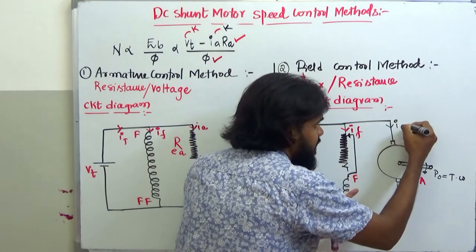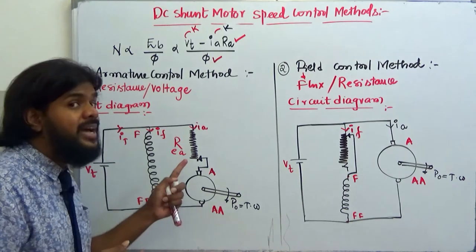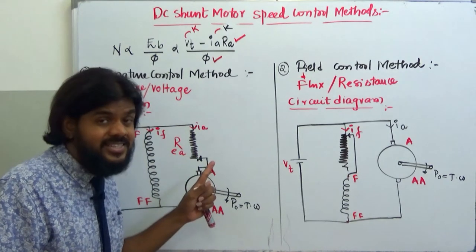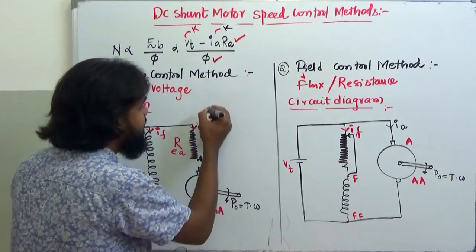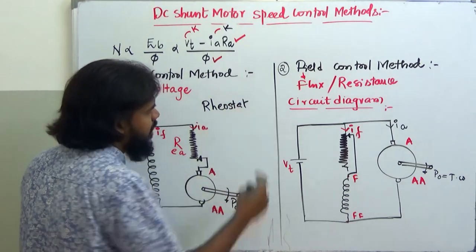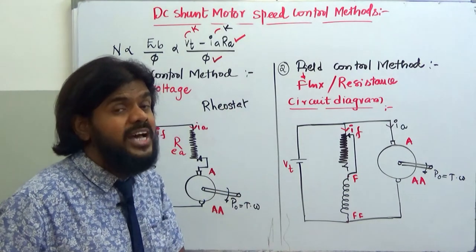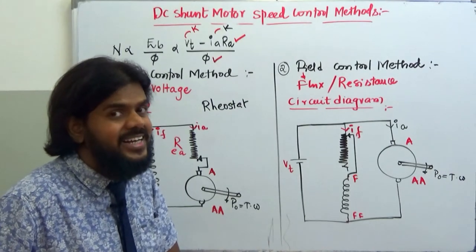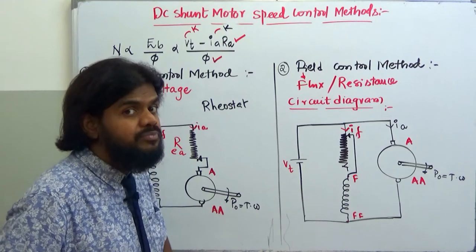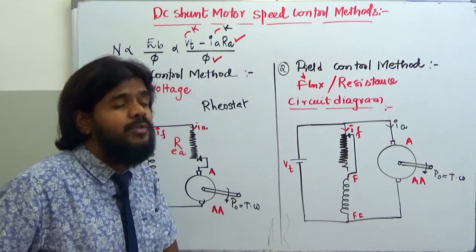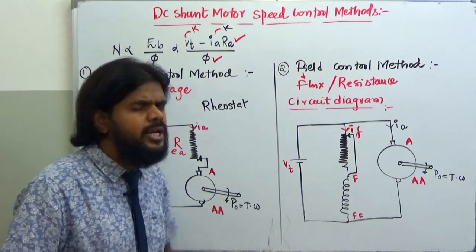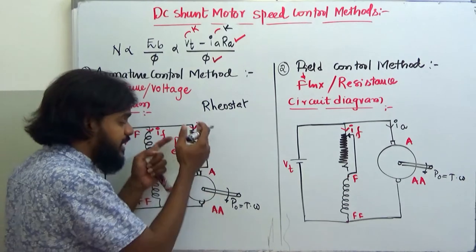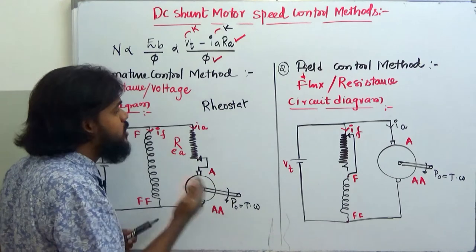In the armature resistance control method, since I cannot change the resistance of the armature winding itself, I connect an external resistor called a rheostat. A rheostat is a high current-rated resistor — its current carrying capacity is around 5 to 10 amperes depending on the motor rating.